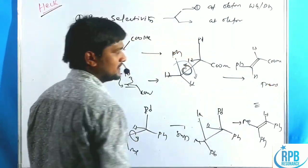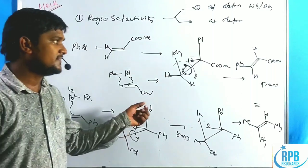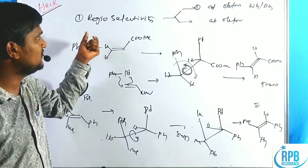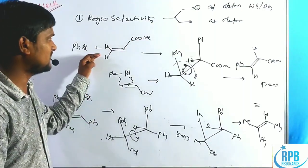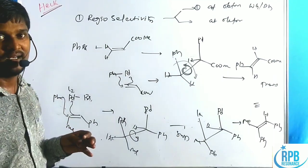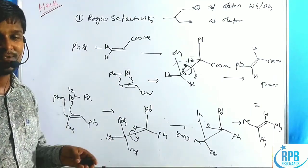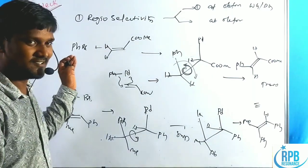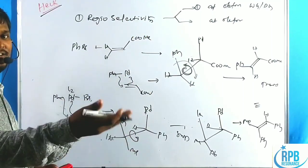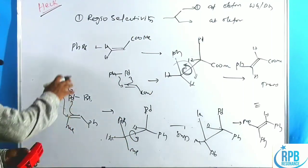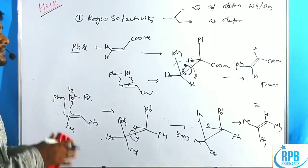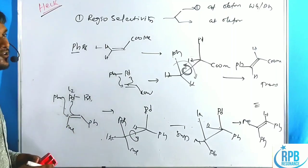The trans product is the major product in this regioselectivity outcome. Substituents on the aromatic ring such as chlorides, cyanides, COOR, and triethylamine or diethylamine groups that are connected to the aromatic ring do not participate in the coupling reaction. This is the major selectivity aspect of the Heck cross-coupling reaction.